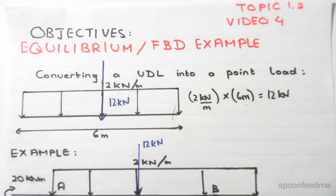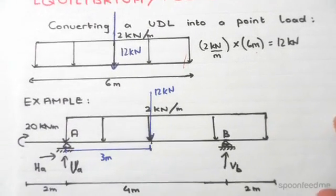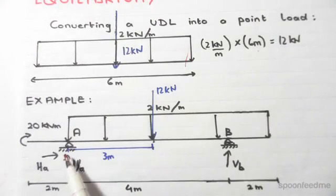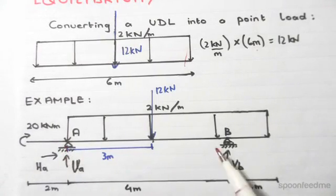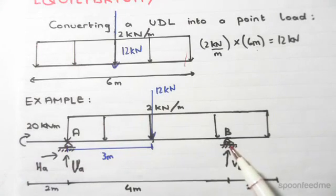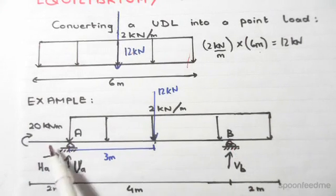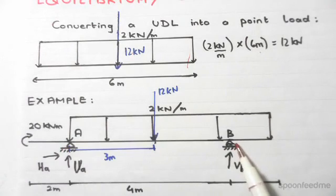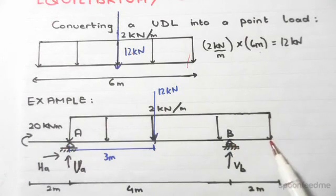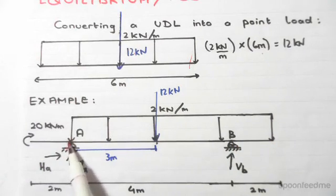Now imagine we have the following example in equilibrium and free body diagrams. We have a simply supported beam with a pin over here and a roller over here. It cantilevers out on both sides by 2 meters each, so it's hanging outside 2 meters to the right and 2 meters to the left.